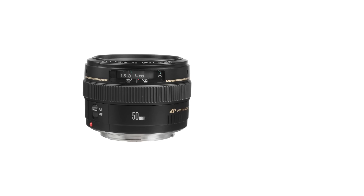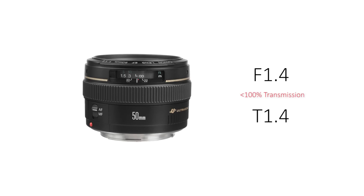To illustrate, imagine a theoretical 15mm f1.4 lens engineered from magic glass with a hundred percent transmission — none of the light entering or exiting the lens gets absorbed by any glass elements. In that case, the lens would have an f-stop of f1.4 and an identical t-stop of t1.4. But in the real world, accounting for light loss, the f-stop would still remain f1.4 while the t-stop would more realistically be around t1.6.